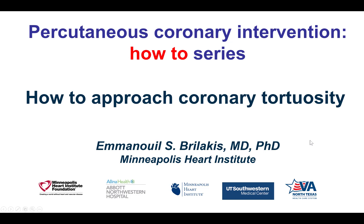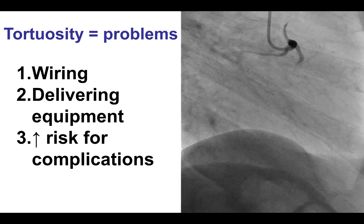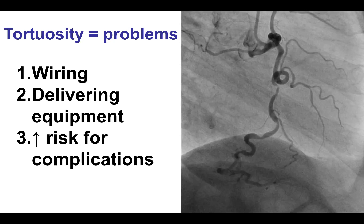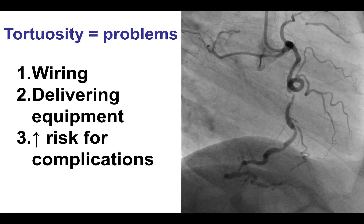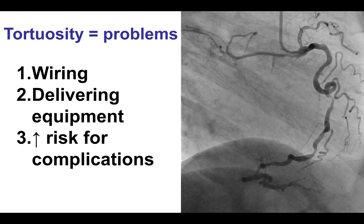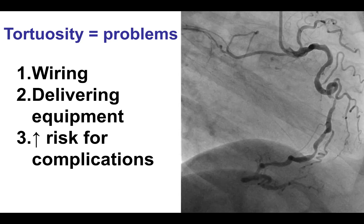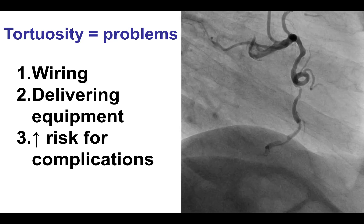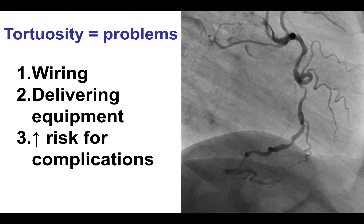Hi, this is Manos Brilakis from the Minneapolis Heart Institute, presenting on how to approach coronary tortuosity. Coronary tortuosity can present several challenges for percutaneous coronary intervention. It can be challenging to wire through these tortuous areas and to deliver equipment — balloons and stents — especially if there is a combination of tortuosity and calcification. Also, tortuosity increases the risk for complications such as stent loss or equipment entrapment.